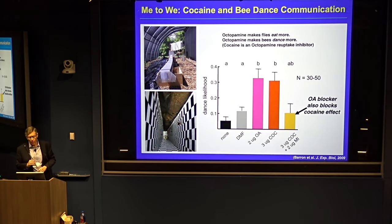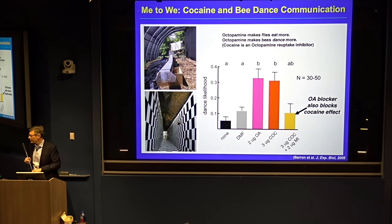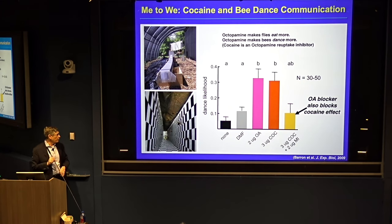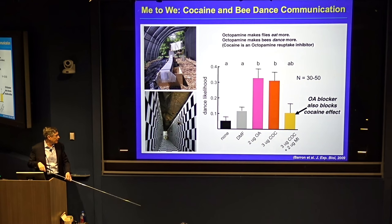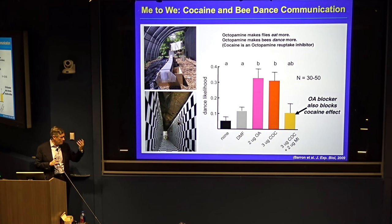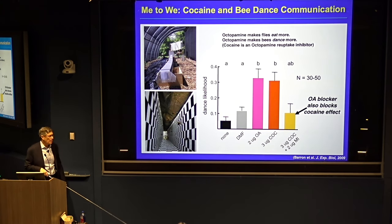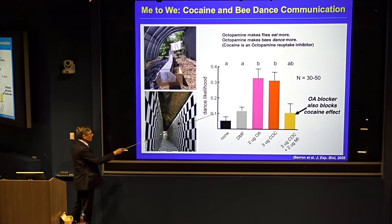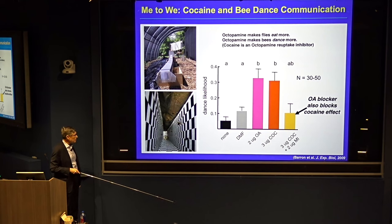Going deeper into this: when flies find good food, they eat more. One neurochemical — octopamine, chemically very similar to dopamine — when you treat flies with it, makes them eat more. Former postdoc Andy Barron at Macquarie University in Sydney showed that when you treat bees with octopamine, it makes them dance more. Using a food source that was borderline — not enough to cause a massive change in dance activity — gave us headroom to see the octopamine result. Andy showed that bees are three times more likely to dance when treated with octopamine.